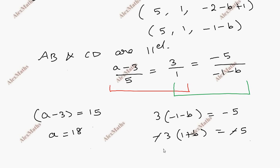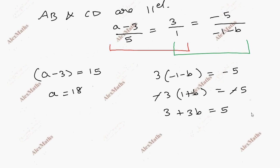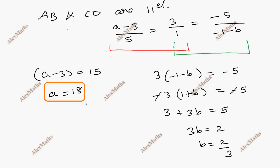From the other proportion: 3 into (minus 1 minus b) equals minus 5 into 1. Solving gives 5 minus 3 equals 2, so B equals 2 over 3. Therefore A is 18 and B is 2 over 3.